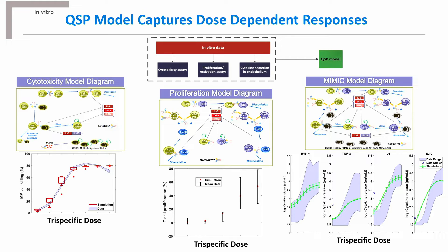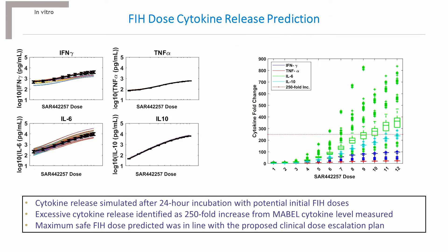Simulated output from this trained model is well aligned with the observed multiple myeloma cell killing, T-cell proliferation, and cytokine release data for four representative cytokines. The developed in vitro QSP model was further refined to represent a sample of peripheral blood from a human multiple myeloma patient using reference immune and tumor cell circulating counts. The system was then subjected to simulated administration of increasing doses of tri-specific antibody, and cytokine concentration was quantified after a 24-hour incubation period.